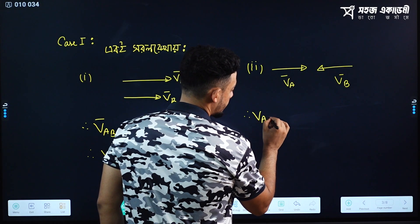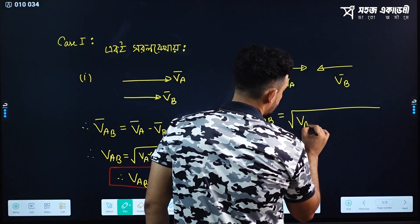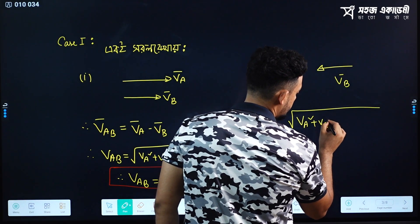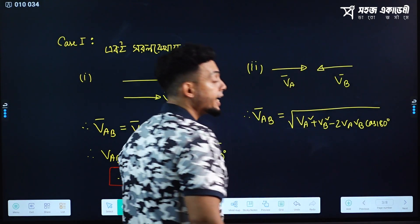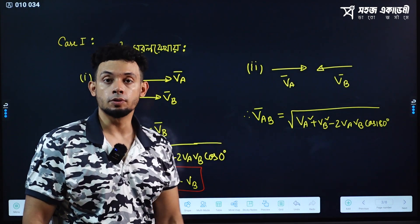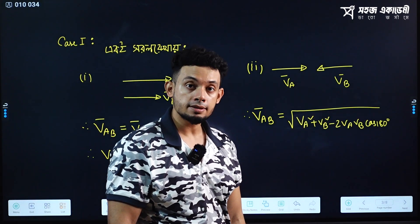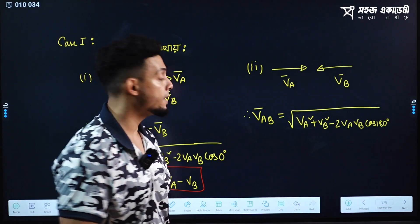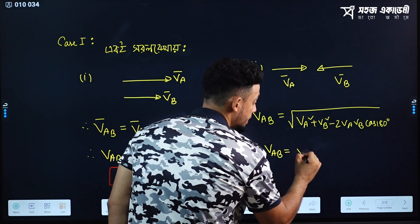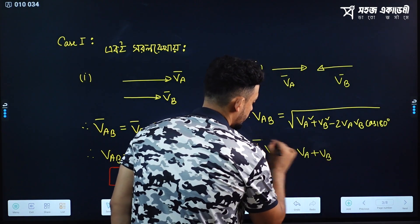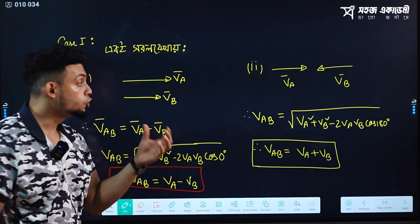If you say the same line, then you say VAB. VAB — what do you see? VA squared plus VB squared minus 2VAVB cos 180 degrees. Why do you say 180 degrees? Cos 180 value, you say minus 1. This minus, this minus is — plus. Plus, what do you say? A plus B whole square. So, is it that you say 180 degrees?